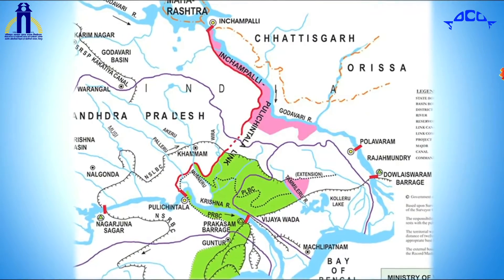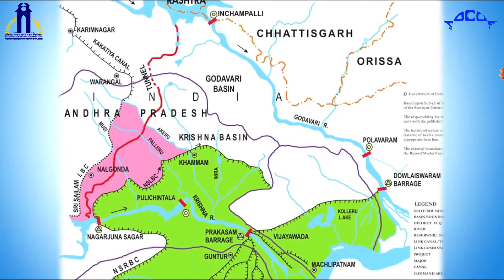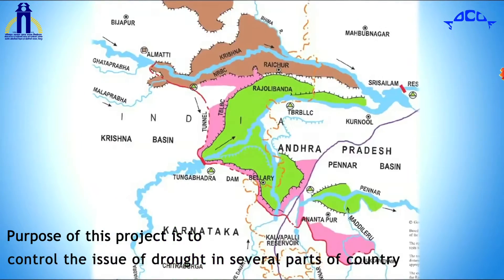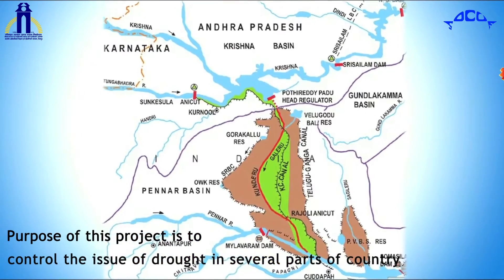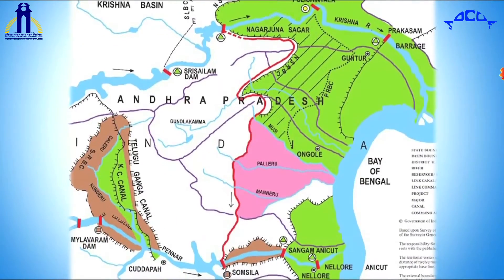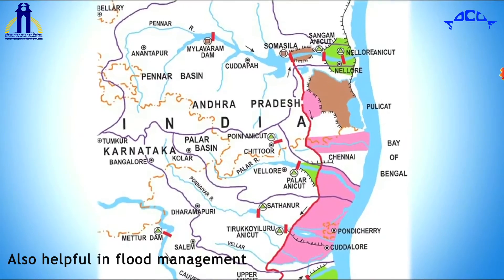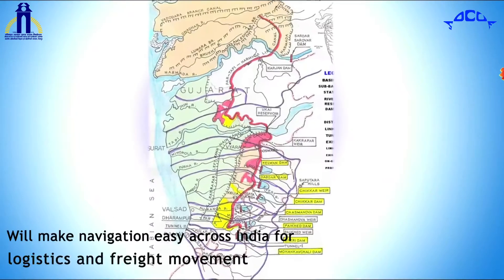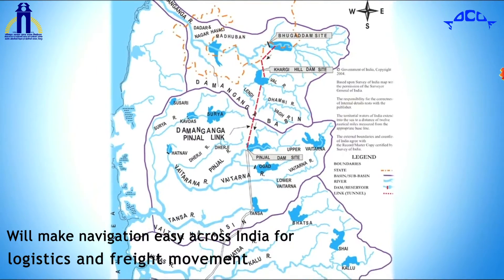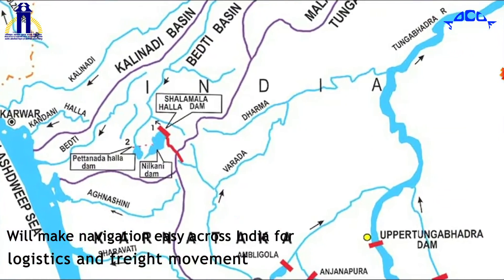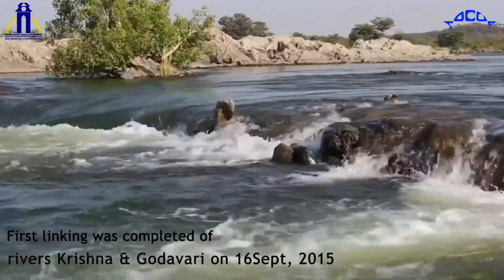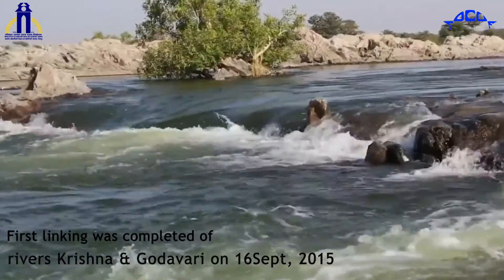This project of interlinking of rivers is of national importance and is put on high priority. The purpose is to control drought in several parts of the country, assist in flood management, and combat the problem of water scarcity. Interlinking of rivers will also make navigation easy across India for logistics and freight movement. The first linking was completed between rivers Krishna and Godavari on 16th September 2015.